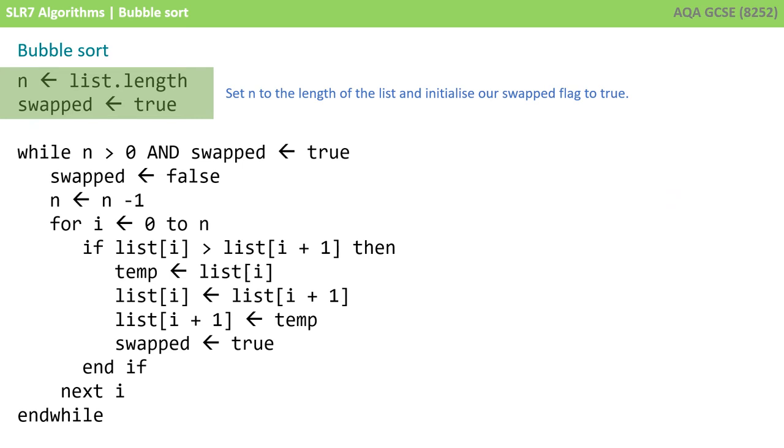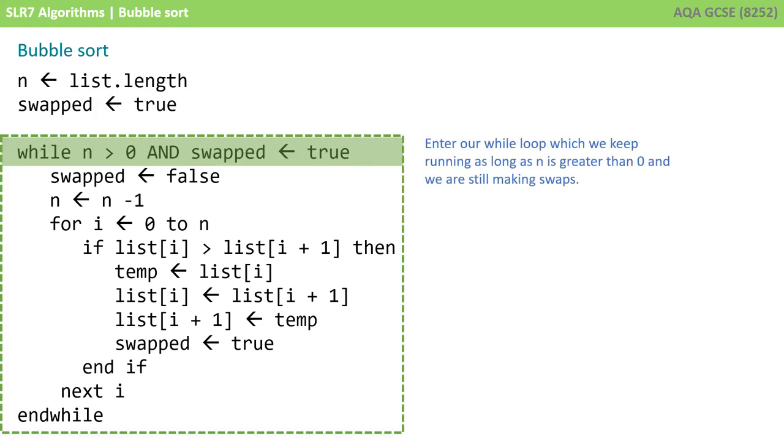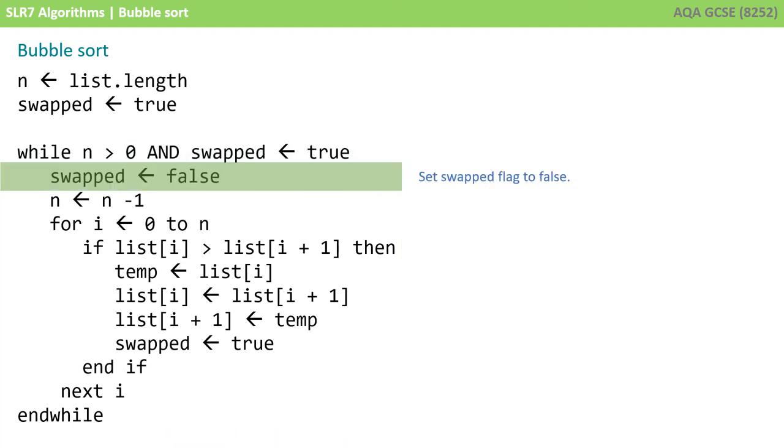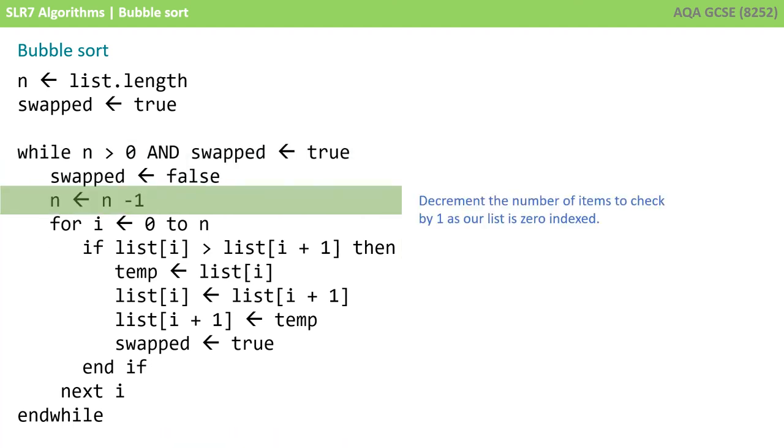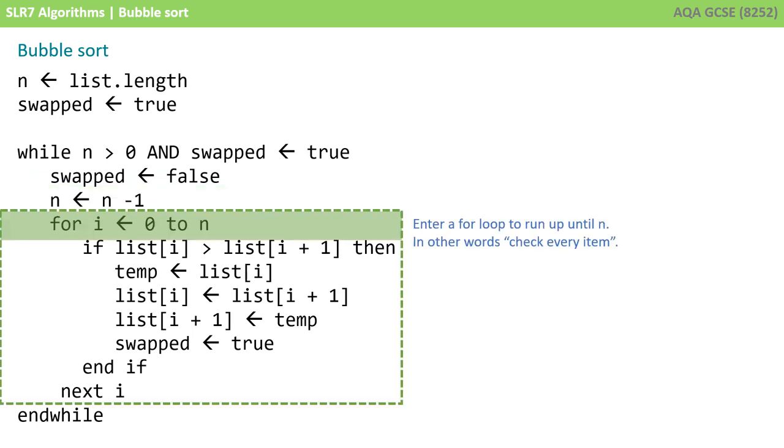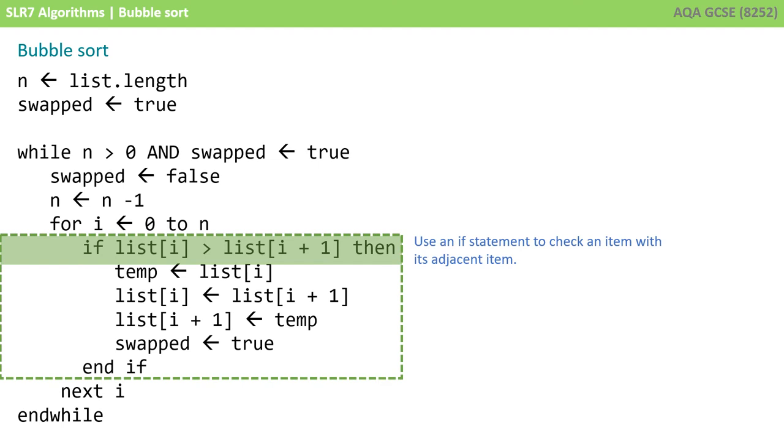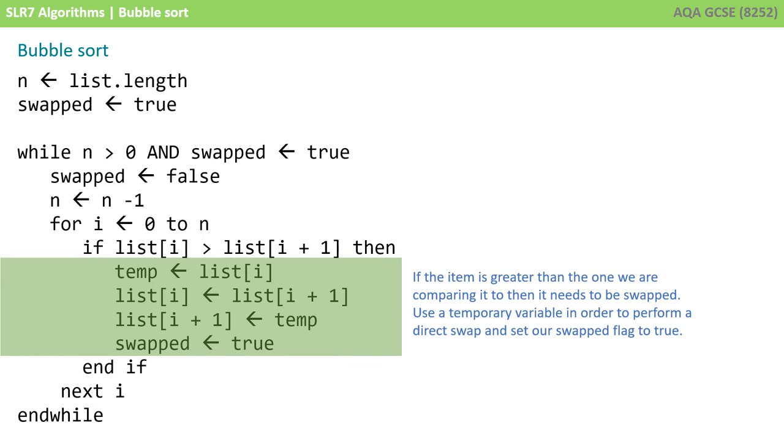We start by setting n to the length of the list and we initialize our swap flag to true. We then enter our while loop, which we keep running as long as n is greater than 0 and we're still making swaps. We set our swap flag to false and decrement the number of items to check by 1 as our list is 0 indexed. We enter a for loop to run up until n, in other words, check every item. We use an if statement to check an item with its adjacent item. If the item is greater than the one we're comparing it to, then it needs to be swapped. We use a temporary variable in order to perform a direct swap and set our swap flag to true.